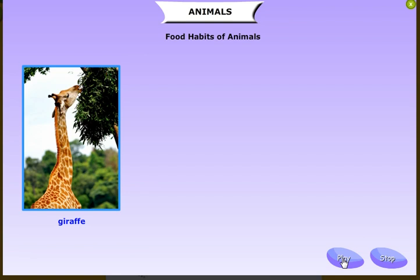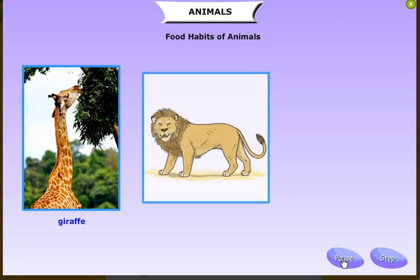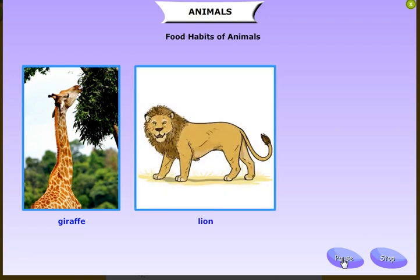Some herbivores are cow, horse, elephant, deer, zebra, and giraffe. Even the big hippopotamus is a herbivore. Some animals eat the flesh of other animals and are known as carnivores. Carnivores mostly feed on herbivore animals.